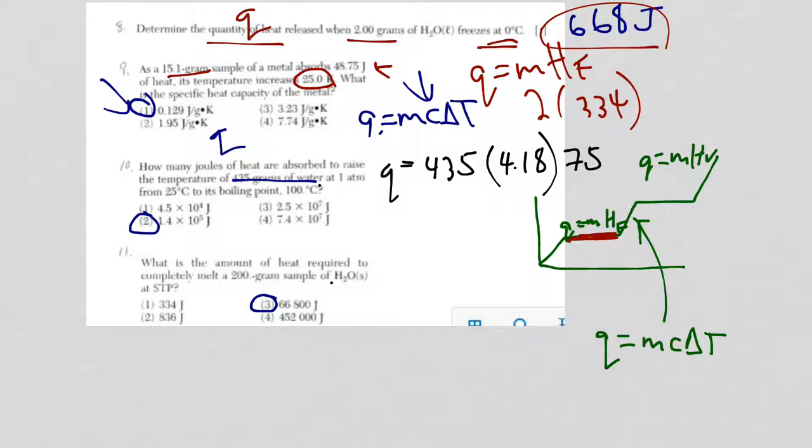Delta T for Celsius and Kelvin. So one change in Celsius is equal to one change in Kelvin. The scales are off by 273, but the delta T's, you can plug in either Celsius or Kelvin. When you go ahead and plug in, you're going to get an answer with a lot of zeros. You have to put it into scientific notation, and your answer is choice 2.